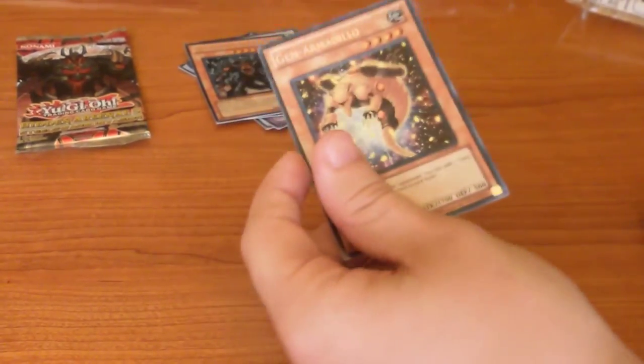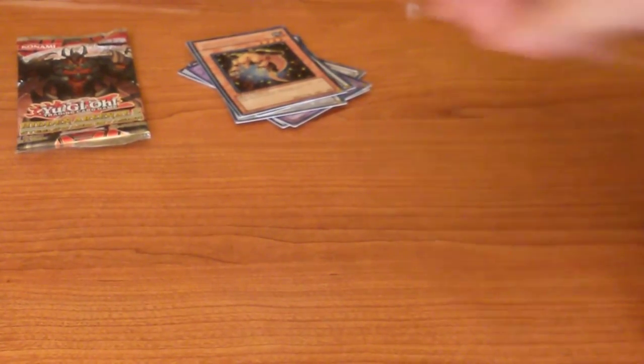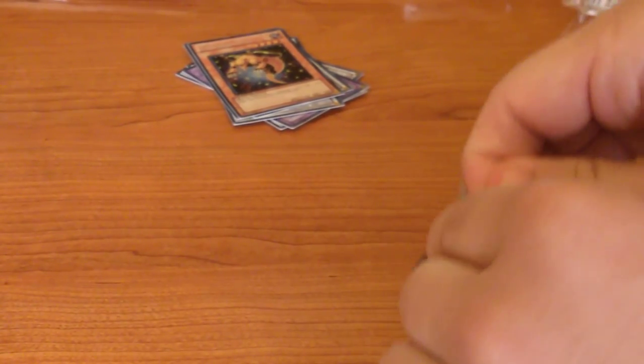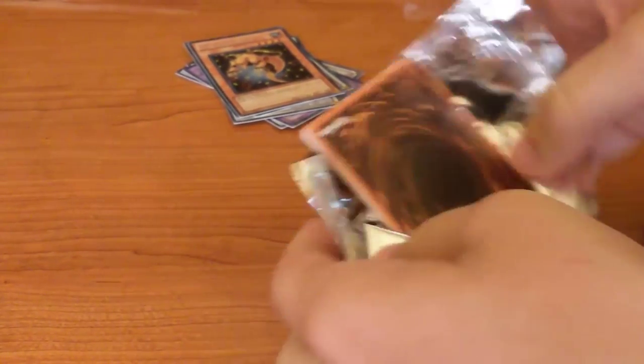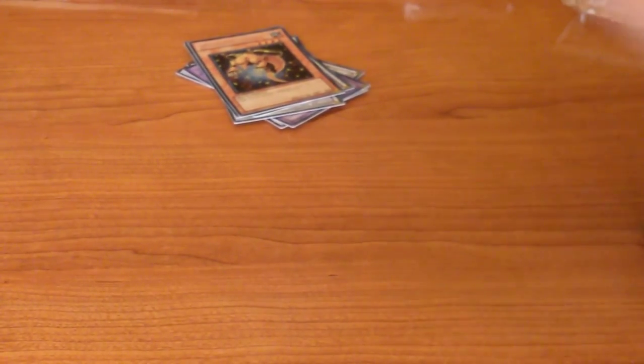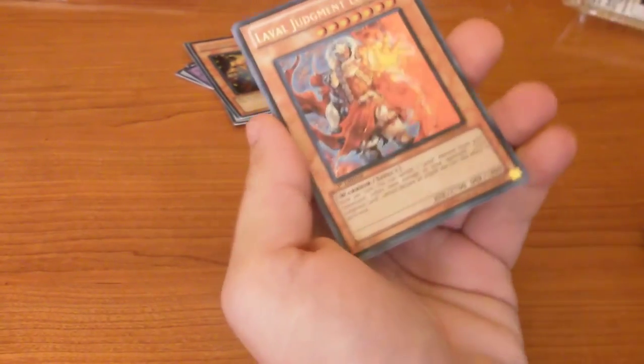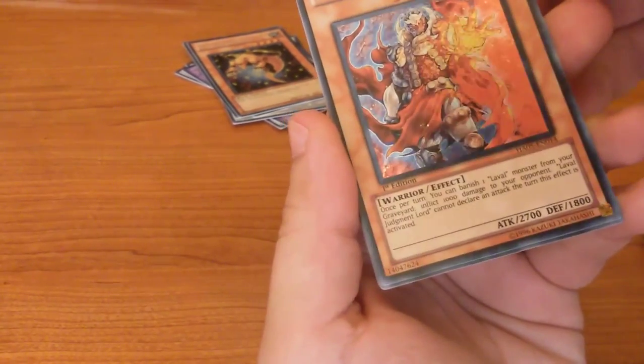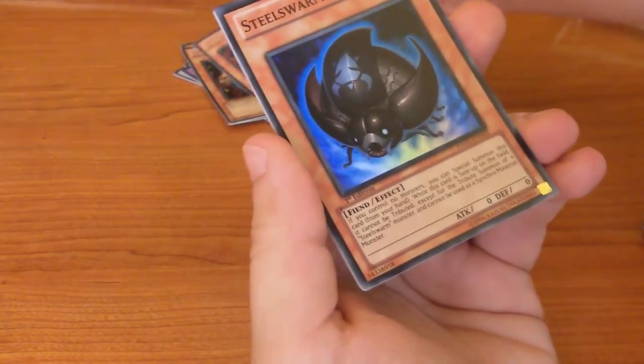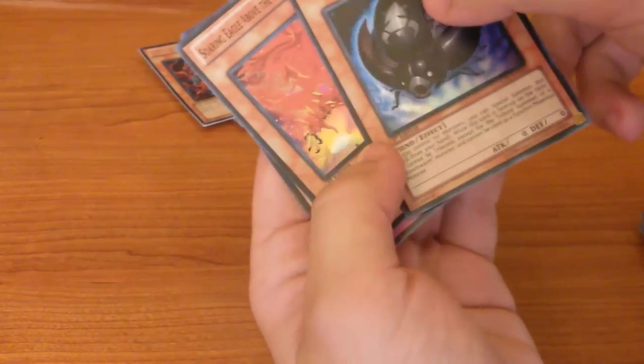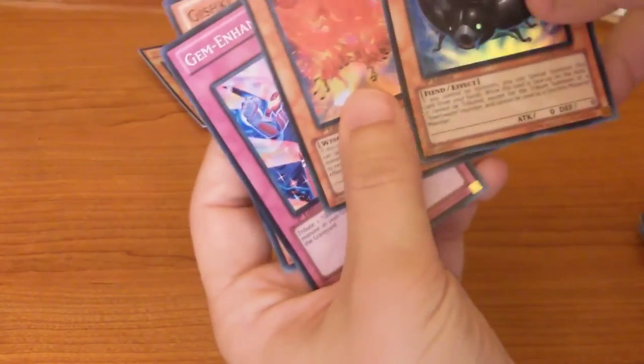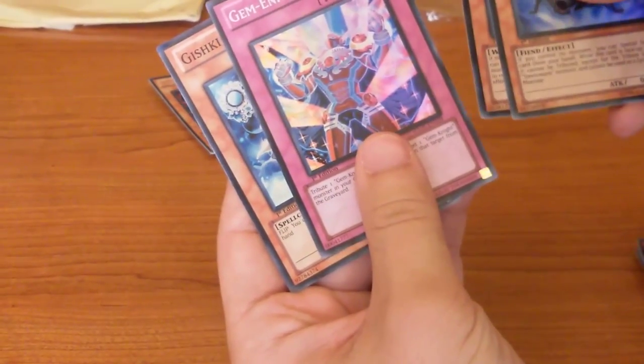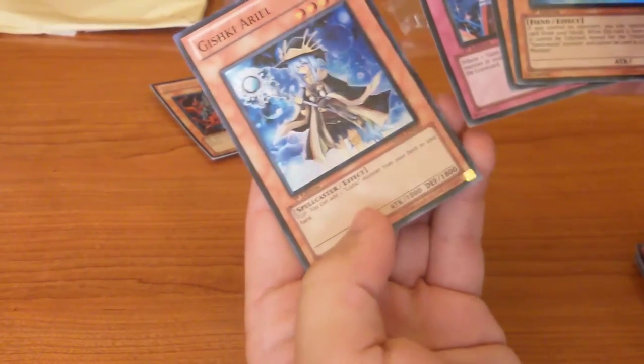Okay, and the last pack, guys. Crap, I forgot to put the secret rare behind. So I got Lavalval Judgment Lord, this looks neat. Steelswarm Cell, nice. I wanted the Steelswarm monsters. Soaring Eagle Above the Searing Land, Gem Enchantment, and Daigusto Sphreez. Nice effect.